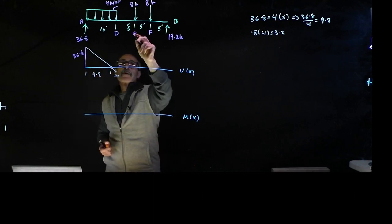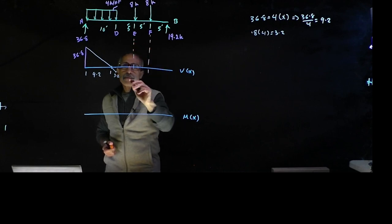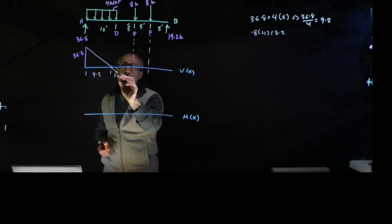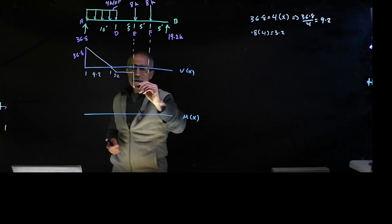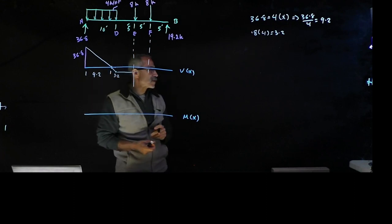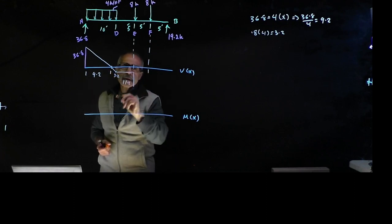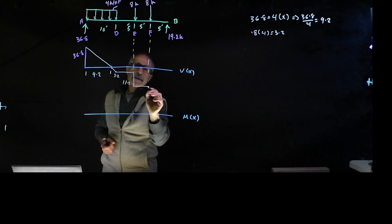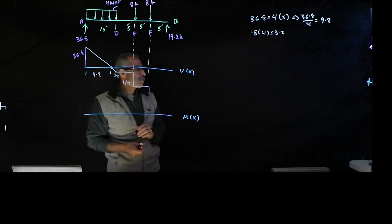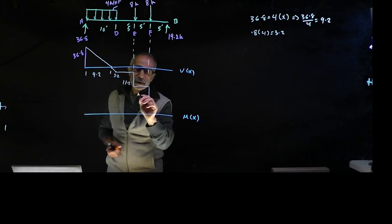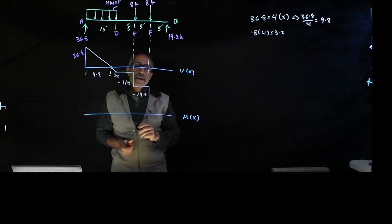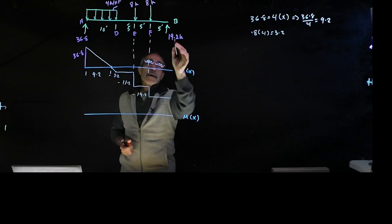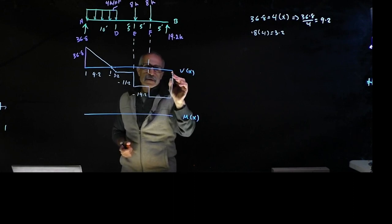Nothing happens until the next point load where I drop 8, giving 3.2 plus 8 equals 11.2 negative. Then another 8 kip drop gives 19.2 negative. These are minus values. Then going across and bringing back to zero with the right reaction. That's the shear diagram.